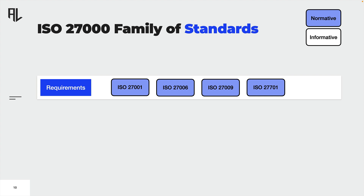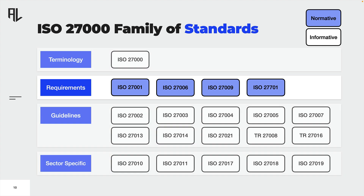Just recently, ISO 27701 was released, and this standard contains requirements and guidelines on how to extend an ISMS to a privacy information management system. This should also not bother you, but it's good to know about these standards. As you can see, there is a ton of standards describing general and sector-specific guidelines — this slide only shows a small selection. These standards provide guidance for all sorts of aspects within the context of implementing, establishing, and running an ISMS.